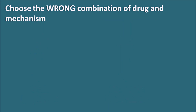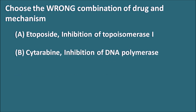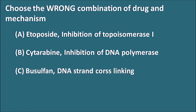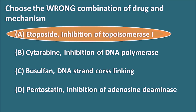Choose the wrong combination of drug and mechanism. Option A: etoposide — inhibition of topoisomerase-1. B: cytarabine — inhibition of DNA polymerase. C: busulfan — DNA strand cross-linking. D: pentostatin — inhibition of adenosine deaminase. The correct (wrong combination) answer is etoposide.